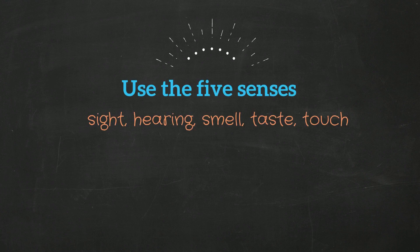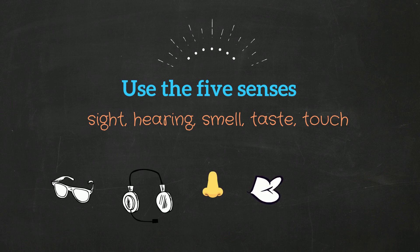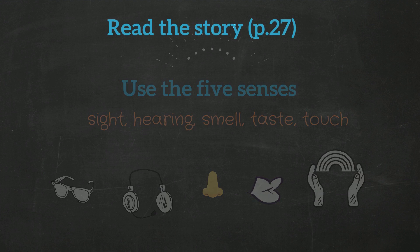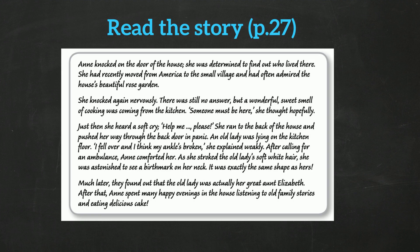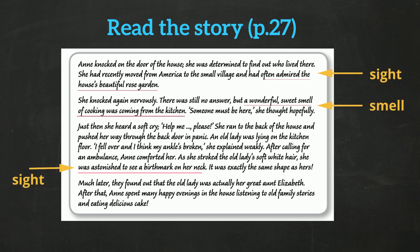The third way of making your stories lifelike is by using the five senses: the sense of sight, hearing, smell, taste, and touch. Now spend some time to read the story on page 27. As you can see, the writer used all kinds of senses like the sense of sight, smell, touch, hearing, and even taste.